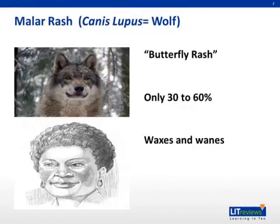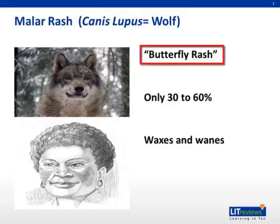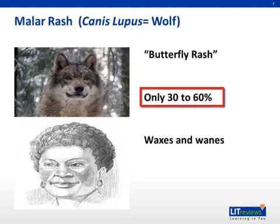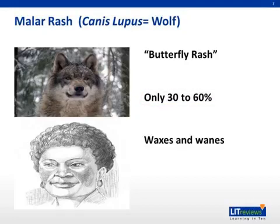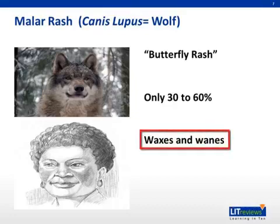The malar rash is also referred to as the butterfly rash. While this is considered the classic rash of lupus, only 30% to 60% of patients will have a malar rash at any given time during their disease. The malar rash is generally raised, erythematous, and covers the upper part of the cheeks and across the bridge of the nose. A clinical pearl is that a true malar rash typically spares the nasolabial folds. This rash can wax and wane with the course of the disease.